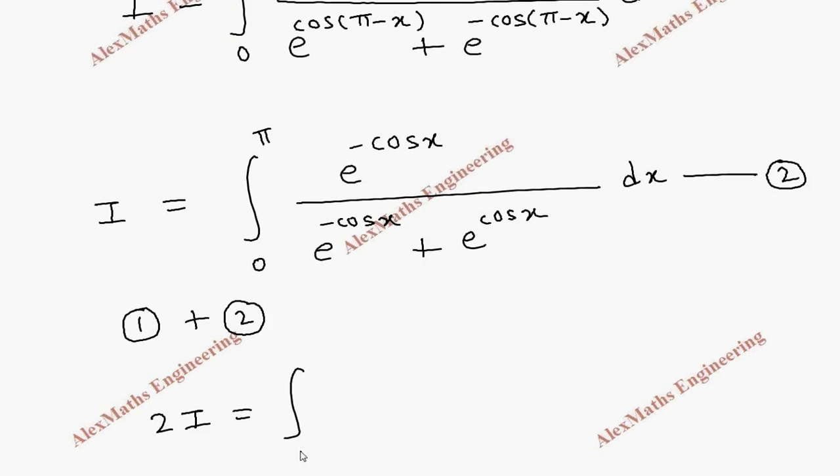And both integral limit is same and we have same denominator in both, e power cos x plus e power minus cos x. We are adding the numerator. In 1 we have e power cos x and in 2 we have e power minus cos x dx.